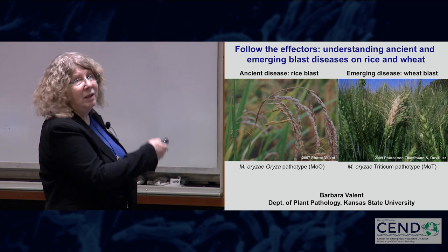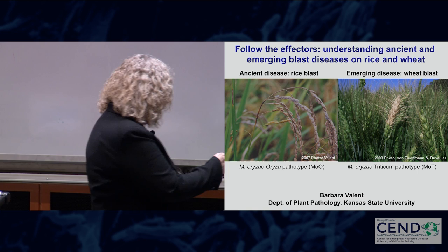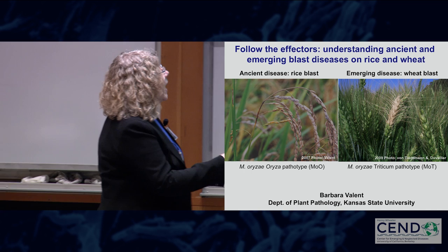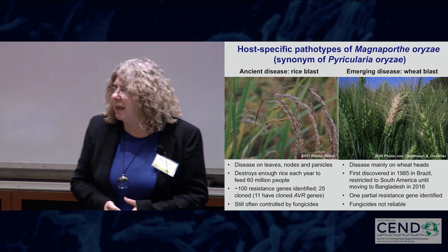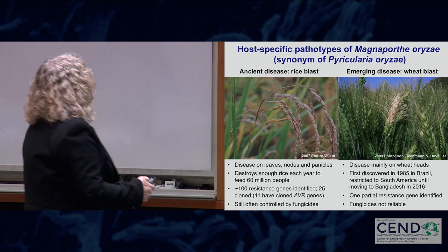This is rice blast. This is the panicle where the grain forms, and the dark region here is the fungus. The neck of the panicle is especially susceptible — if it gets infected, there's zero percent yield, so it's a very explosive disease. There are also leaf lesions. This is wheat blast, an emerging disease only seen since 1985 in Brazil. We think the blast fungus moved to rice around 7,000 years before present, whereas wheat blast is new.